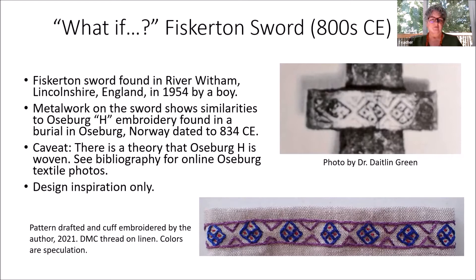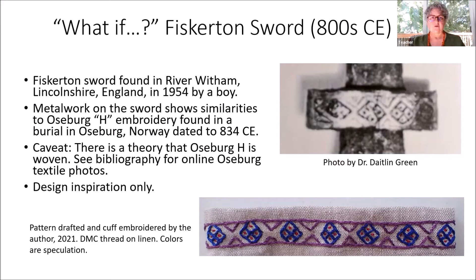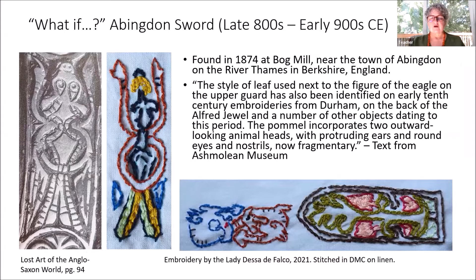I did this pattern on the cuff of a dress I made, and the colors are speculative. We have so little hard evidence to go on for embroidery that I'm grasping at straws trying to tell you what kinds of patterns you can use. Here's another sword: the Abingdon sword, from the late 800s to early 900s, getting towards the end of the early English period. This sword was found at Bog Mill on the River Thames.